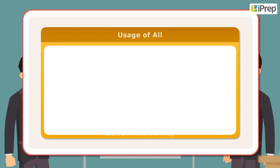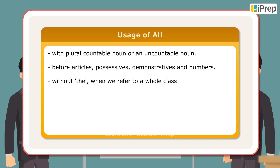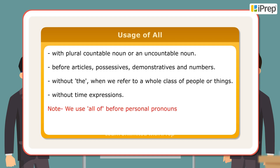Usage of 'all': We use 'all' with a plural countable noun or an uncountable noun before articles, possessives, demonstratives, and numbers. Without 'the' when we refer to a whole class of people or things, and without time expressions. Note: we use 'all of' before personal pronouns such as us, them, demonstrative pronouns — this, that, these, those.